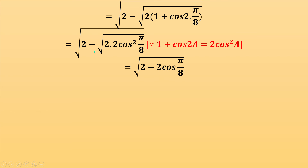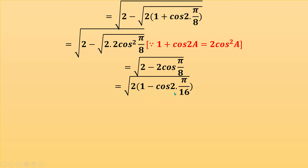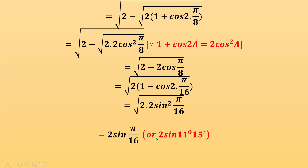This equals √(2 - 2cos(π/8)). Taking 2 common again gives √(2·(1 - cos(π/8))). Writing π/8 as 2·(π/16) uses the identity 1 - cos2A = 2sin²A. So this equals √(2·2sin²(π/16)) = 2sin(π/16). Proof is complete.